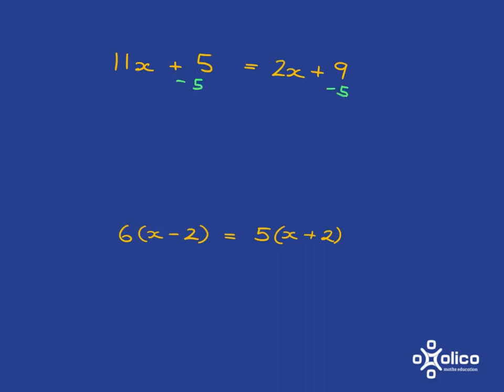We can do that by subtracting 5, but of course in order to keep things balanced, what we do to one side we must do to the other side of the equation. Now we want to get rid of x's on the right, so let's get rid of this 2x on the right. And the way we can do that is to subtract 2x on the right.